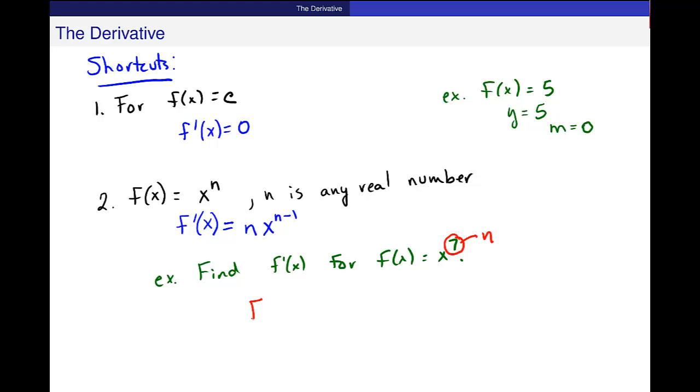So I know from this shortcut, f prime of x equals nx to the n minus 1. So I'm going to put in, because I know my n is 7, 7x and 7 minus 1, I get 7x to the 6th power.